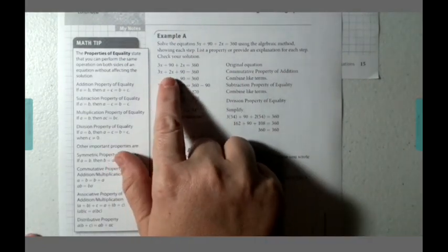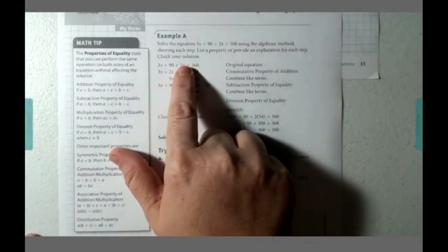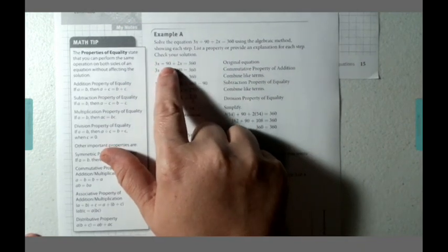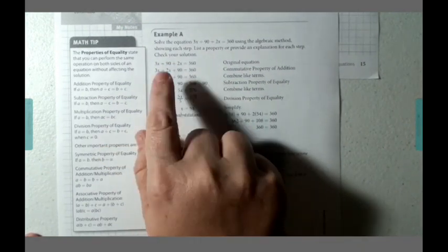So we're going to use the commutative property of addition, which means we're going to rearrange and put our like terms together. So we have 3x plus 2x. So notice all they did was move the 2x in front of the 90, and we switched places with the 90 and the 2x.